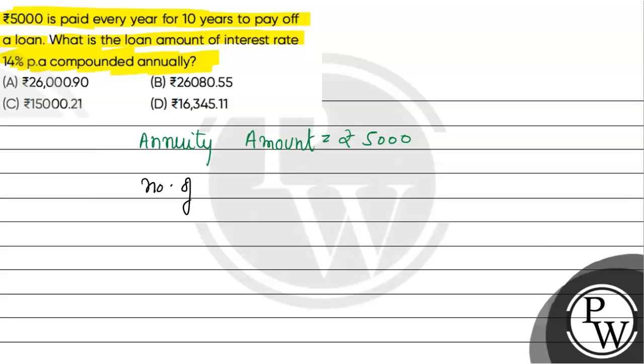And the number of installments is also given. Number of installments equals 10, which we represent as small n.